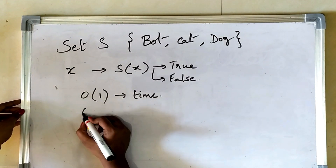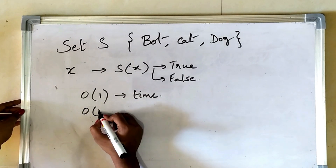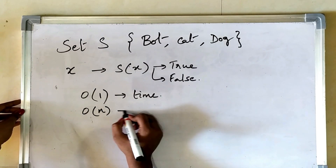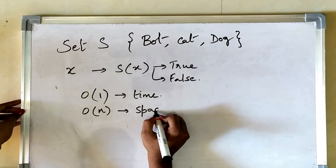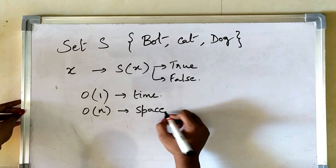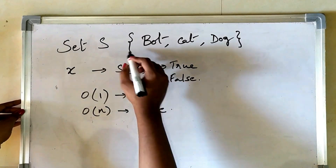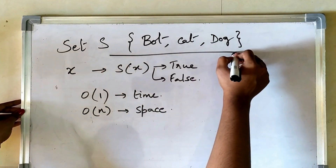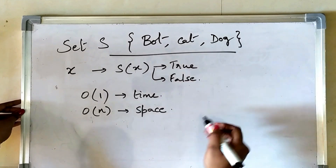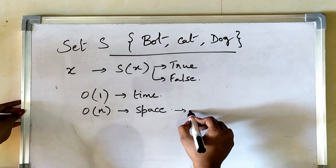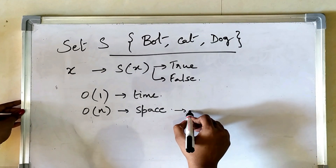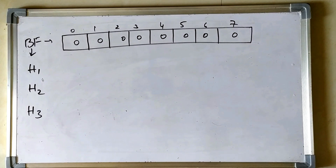But the space complexity, if you think about it, is O(L) since we will be storing the set as well. So how to reduce the space complexity is where the bloom filter steps in.